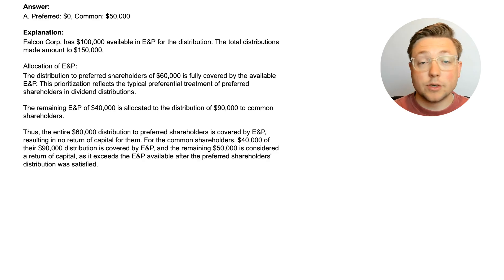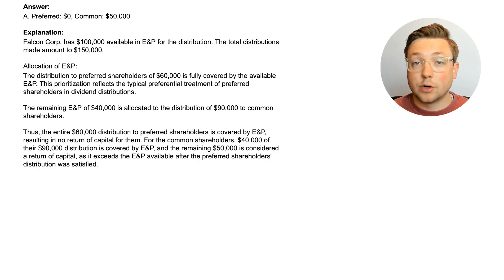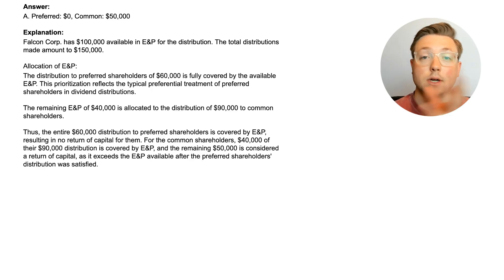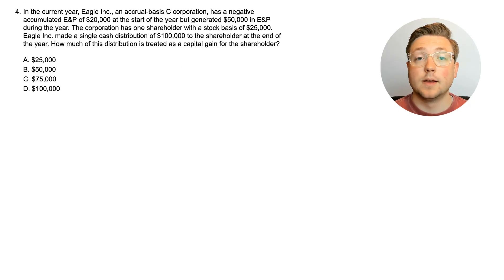This is a pretty straightforward question basically teaching you that when it comes to preferred shareholders and common shareholders, preferred shareholders get first access to the E&P — meaning they get dividend income before common shareholders get dividend income.